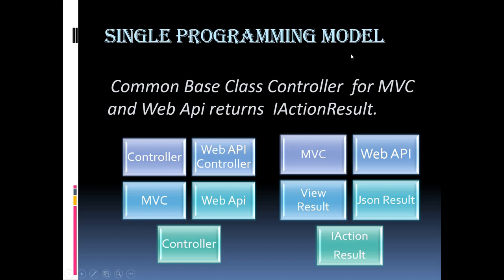ASP.NET Core provides a unified programming model for developing both web apps and web APIs. Previously, MVC inherited from the Controller base class and Web API inherited from the ApiController base class. But now both inherit from the Controller base class and return IActionResult. This IActionResult interface provides several implementations — built-in result types such as JsonResult and ViewResult implement it. In ASP.NET Core Web API, the controller action method returns JsonResult, while in an ASP.NET Core web application the return type is ViewResult.